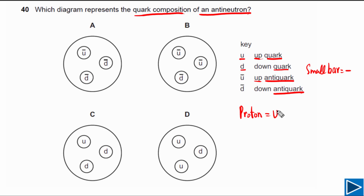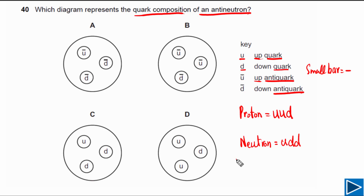The quark composition of a proton is two up quarks and one down quark. A neutron has one up quark and two down quarks. One up quark has a charge of +2/3 e, and one down quark has a charge of −1/3 e.